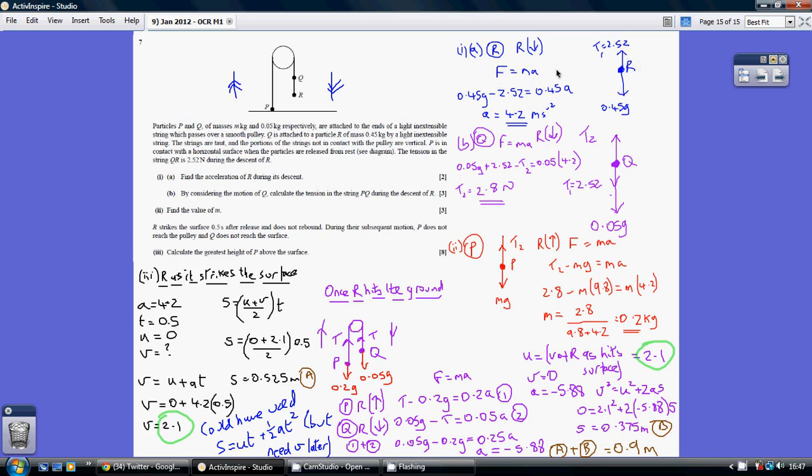F equals MA, Newton's second. So our net force is 0.45G minus 2.52, that's our force, equaling our mass times acceleration, 0.45 times A, allowing us to work out that the acceleration is 4.2. Now remember, these are all attached to a string, so they're all going to be accelerating at the same rate.